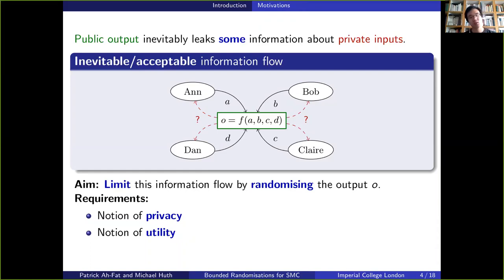In order to do so, we needed to formalize two specific notions, a notion of privacy in order to quantify the information that flows about one input, and the notion of utility in order to assess how good of an approximation a randomization is.